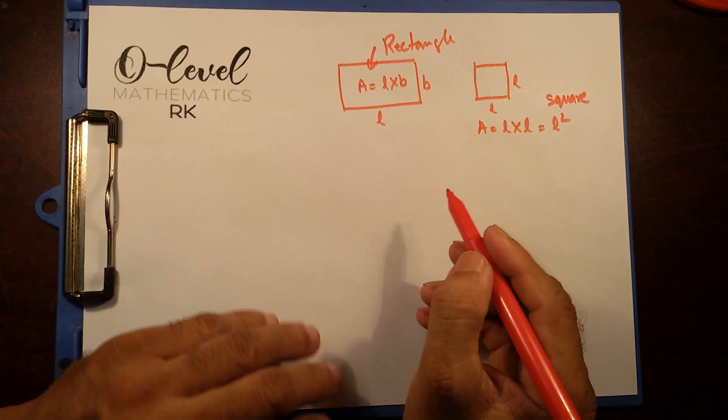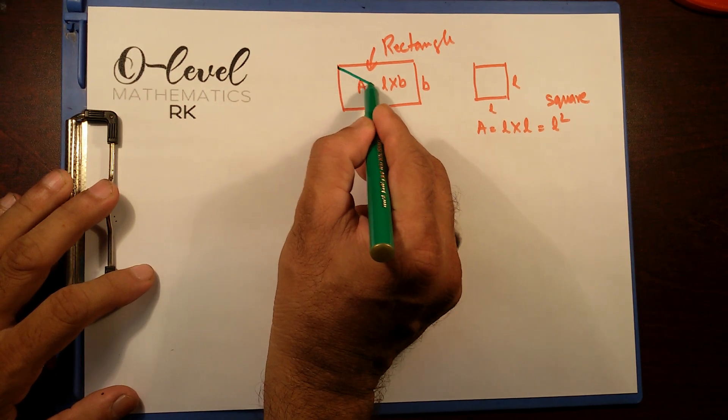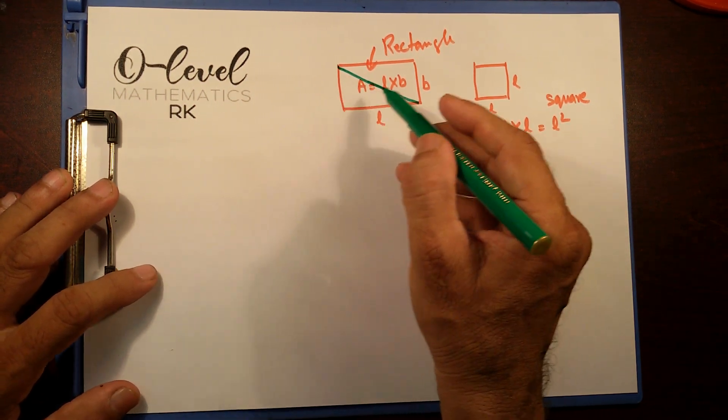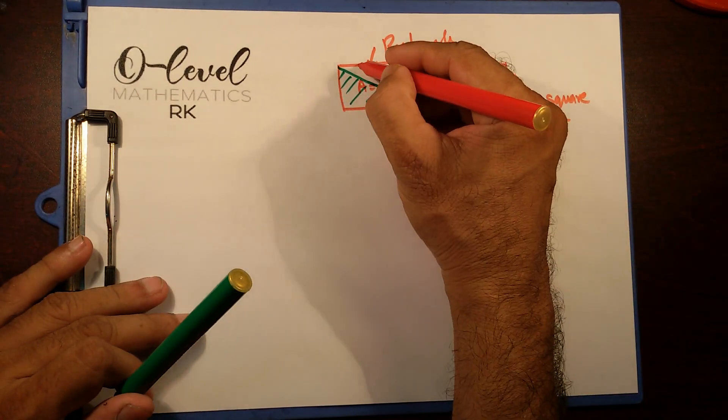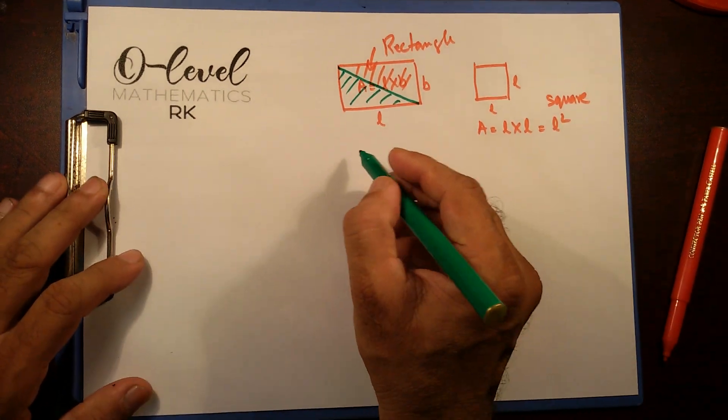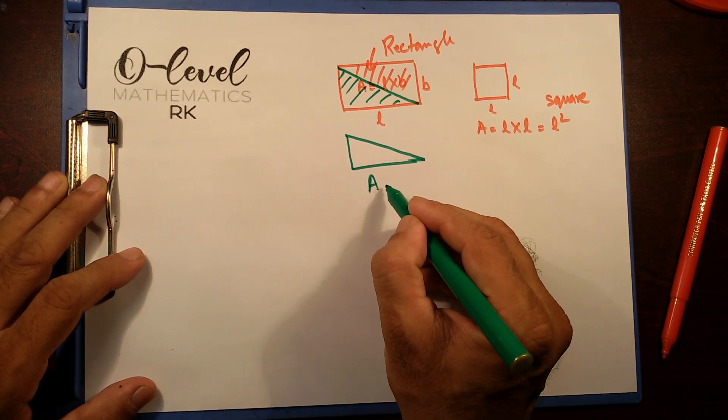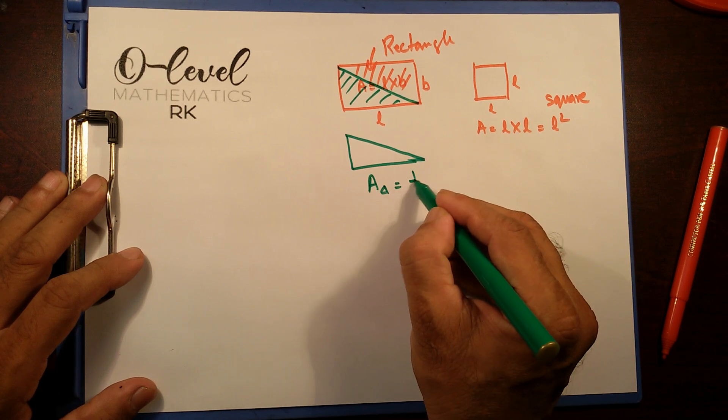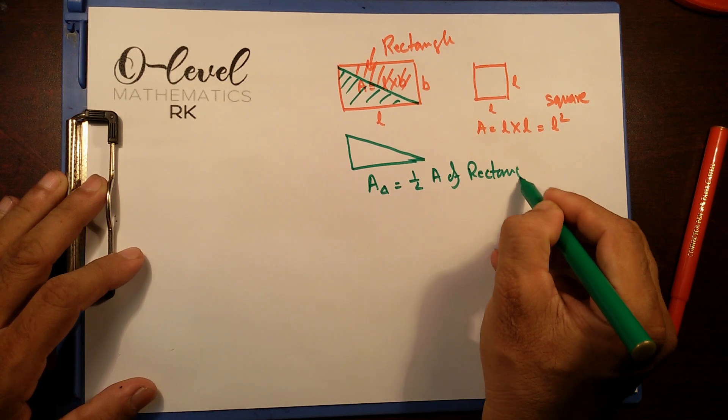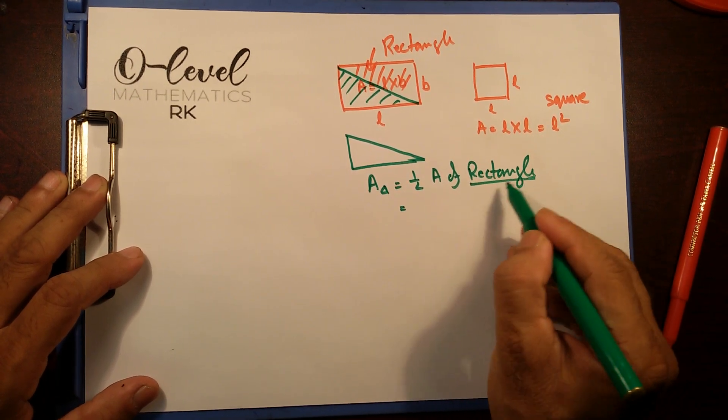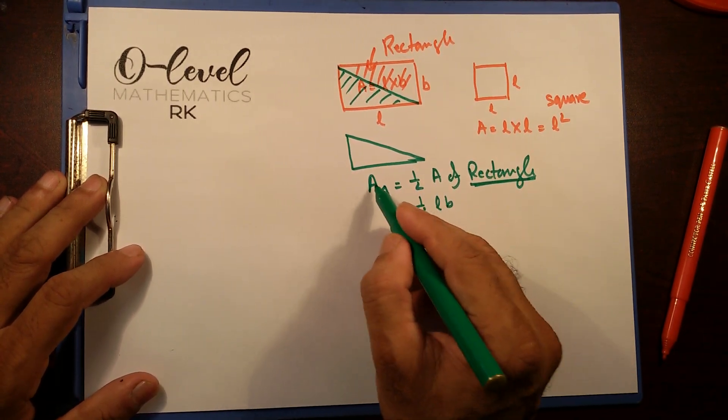Now, how to find out area of a triangle? Let's say, if I split this rectangle into equal half by drawing a diagonal. This part and that part has to be the same. So what happened, area of this triangle should be, area of triangle has to be equal to half of area of the rectangle. So what was the area of rectangle? Half, it was length into breadth. So that's our area of triangle.